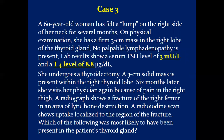Case 3: A 60-year-old woman has felt a lump on the right side of her neck for several months. Physical examination found a 3-centimeter mass in the right lobe of the thyroid gland with no lymphadenopathy. Lab results show serum TSH of 3 mIU/L (normal) and T4 level of 8.8 micrograms per deciliter. She undergoes a thyroid scan showing a solid mass in the right thyroid lobe. Six months later, she presents with pain in the right thigh. A radiograph shows a fracture of the right femur in an area of lytic bone destruction. A radioiodine scan shows uptake localized to the region of the fracture. Which of the following was most likely present in the patient's thyroid gland?